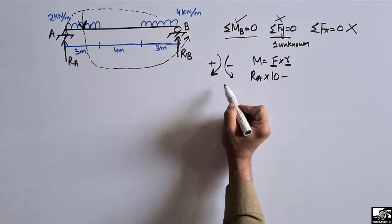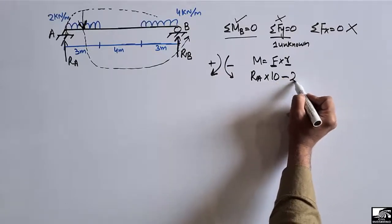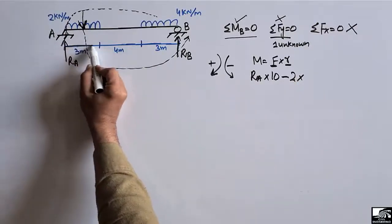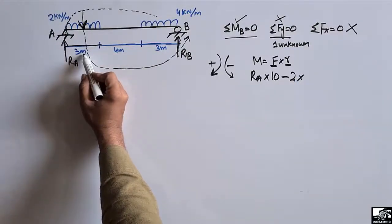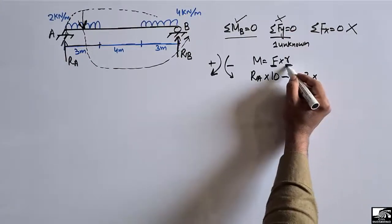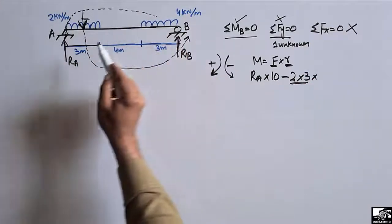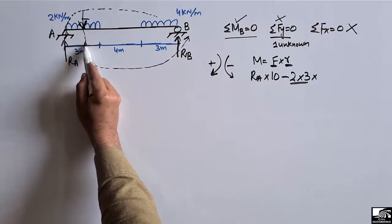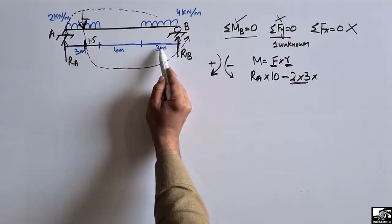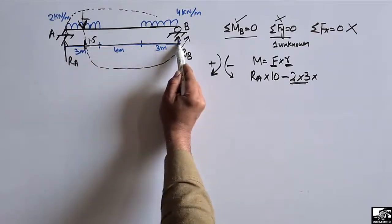The moment arm for the first UDL (2 kN/m) is the distance from its centroid to point B: half of 3 is 1.5 meters, plus 4 meters, plus 3 meters, giving 8.5 meters total. The load acts at the center of the distributed load. The second UDL of 4 kN/m also creates an anti-clockwise moment about B, so it is also negative.